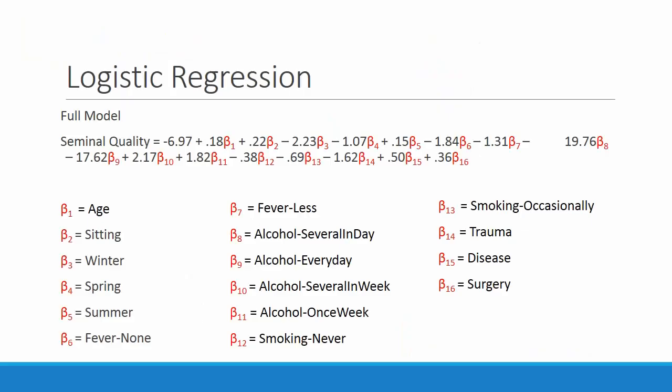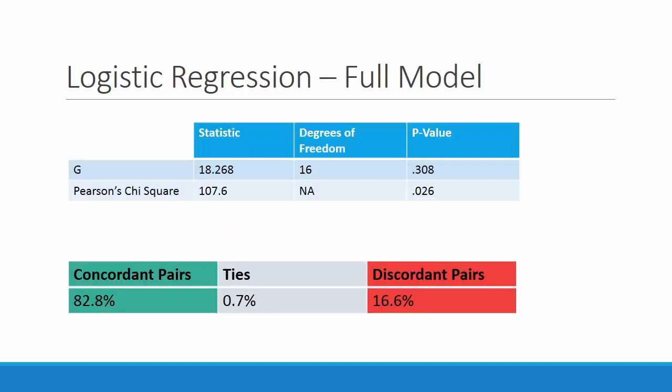Now that we have seen our CART analysis, we can look at the logistic regression portion of our comparison. To find the most parsimonious model, we first ran a logistic regression on all the variables to determine which were worth performing drop-in deviance tests on. This was our full model, and as you can see, it involves many variables, and although the p-values are not shown, not many were significant. As you can see on this slide, the full model has a fairly high G-score, and the p-value was insignificant. We are further concerned about this model seeing as the Pearson's chi-square score yields a significant p-value, meaning that the model had a poor fit.